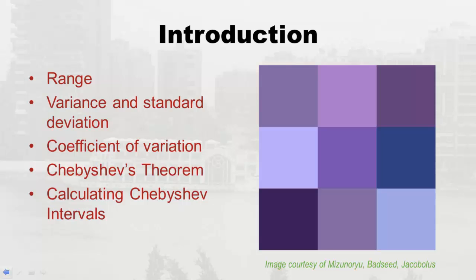We're going to concentrate on measures of variation. The first one I'll talk about is range, then variance and standard deviation together, then the coefficient of variation, abbreviated CV, then Chebyshev's theorem and the intervals that come from it. Remember, intervals have a lower limit and an upper limit — I'll remind you of that. Let's get started.